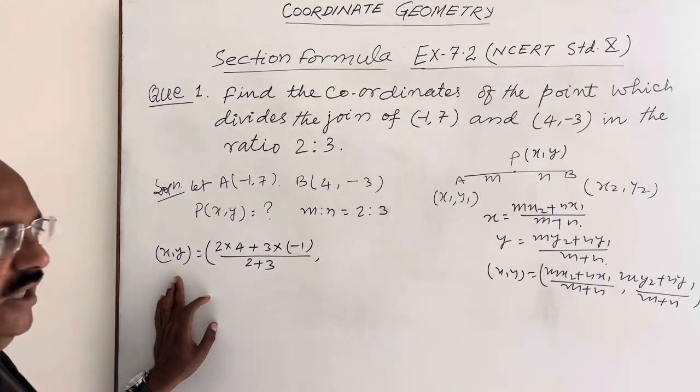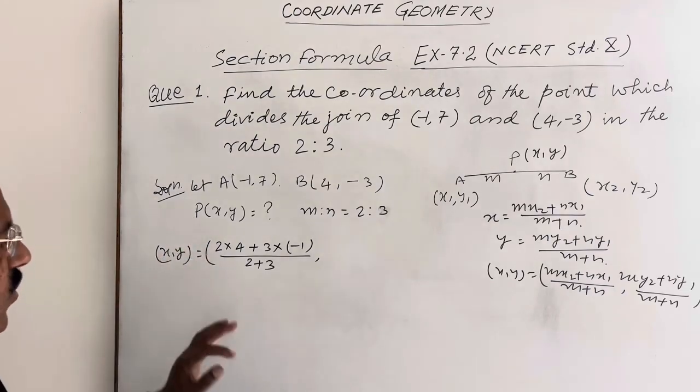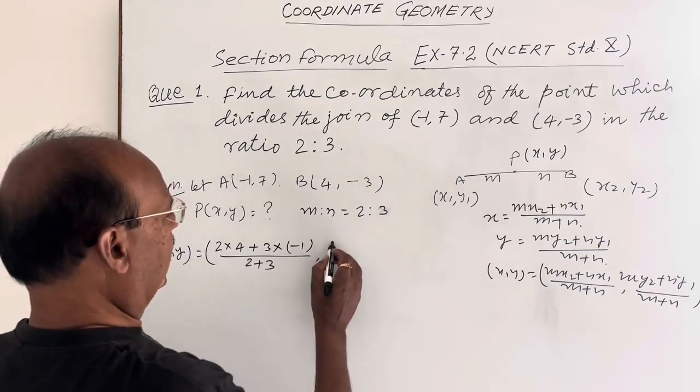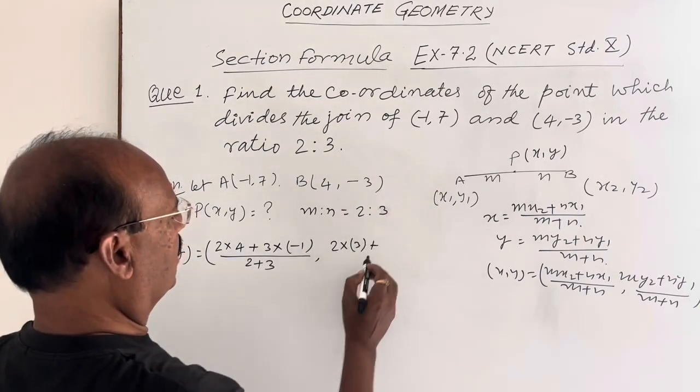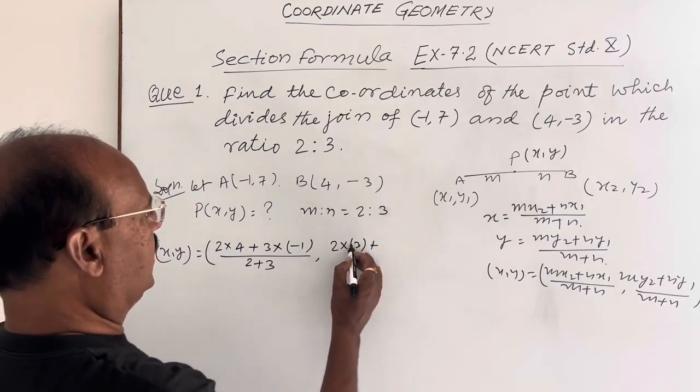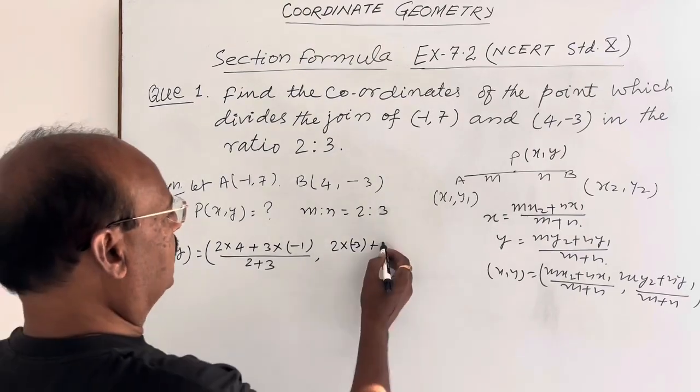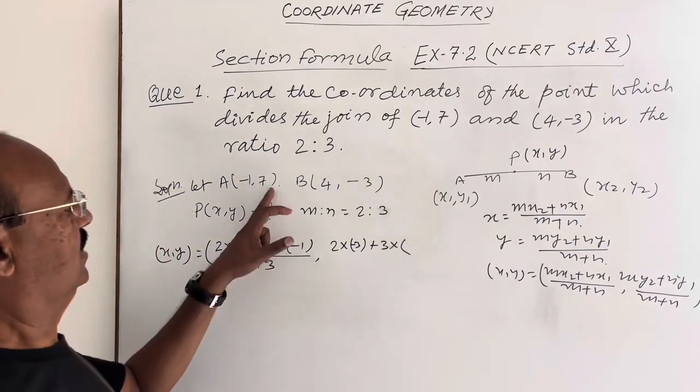Similarly we can write the y-coordinate also. my2 plus ny1, so m is 2 and y2 is -3, plus ny1, so n is 3 and y1 is 7, divided by m plus n.